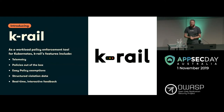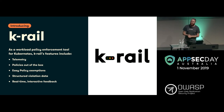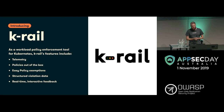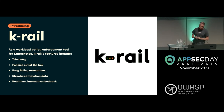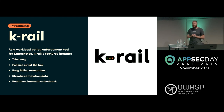None of the existing tooling really scratched our itch, so we went and made our own one. It's called K-Rail. It is now open source. At KiwiCon we got to the end of the talk and did a really big dramatic 'mash the button' release on stage. What is K-Rail? K-Rail is a workload policy enforcement tool for Kubernetes. Its features include telemetry so it makes data easily accessible, great policies out of the box, easy to add policy exemptions, structured violation data, and real-time interactive feedback for developers. Our design team came up with this traffic light logo which, given the car metaphor, is pretty apt.